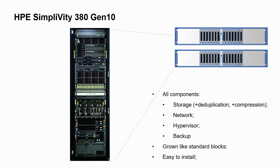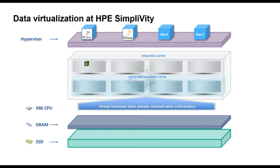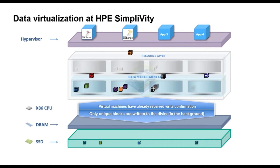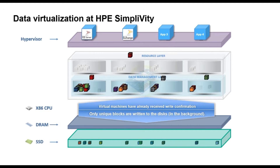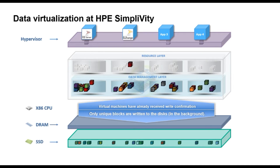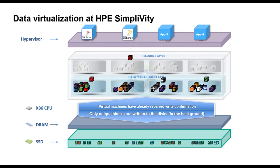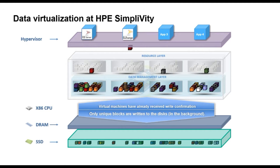It's grown with standard blocks and deployed automatically with Deployment Manager. The most important part of SimpliVity is the Omni-Accelerator — it works with storage workloads, processes all traffic for 8KB blocks, and checks them with each other. All unique data is written to SSD, but non-unique data just creates links and is discarded.